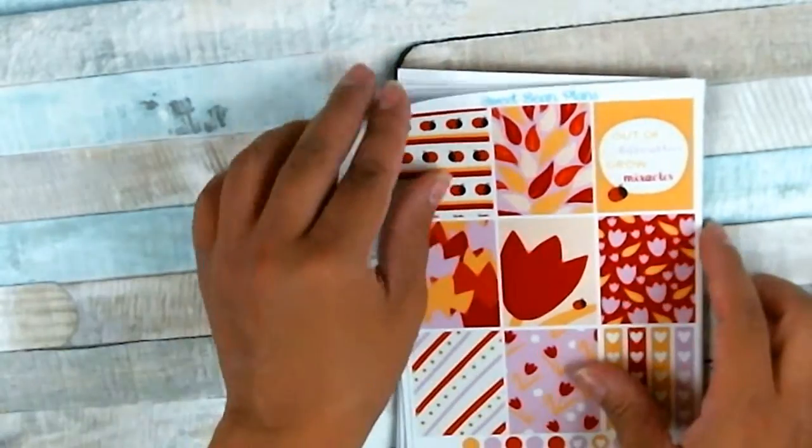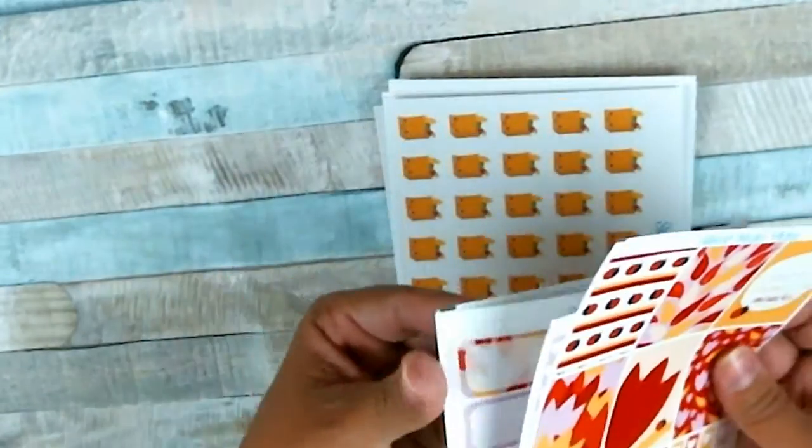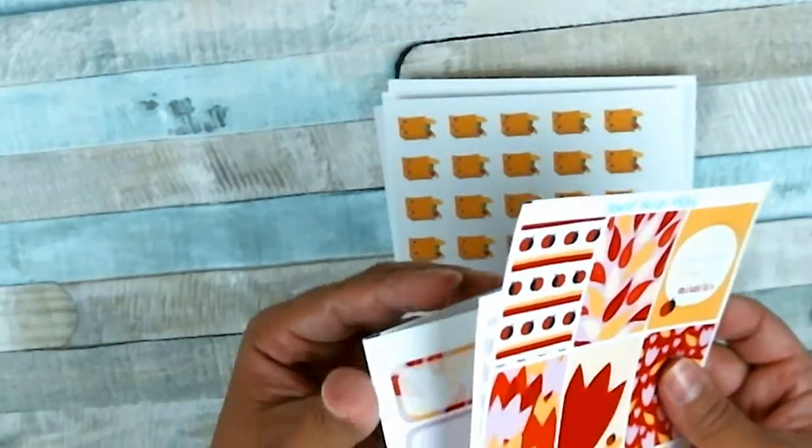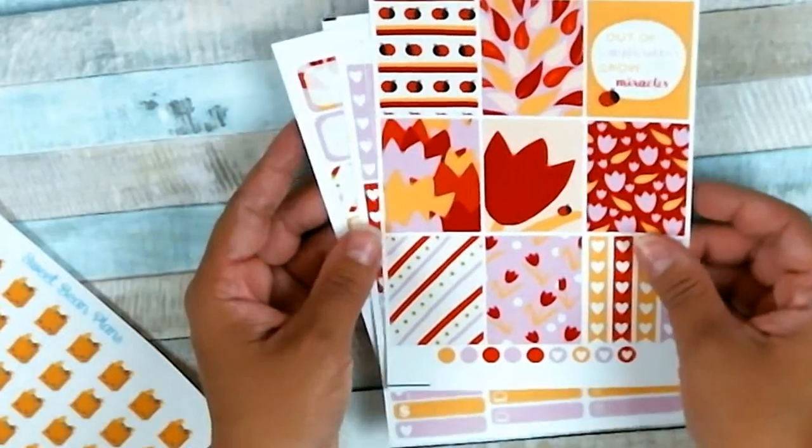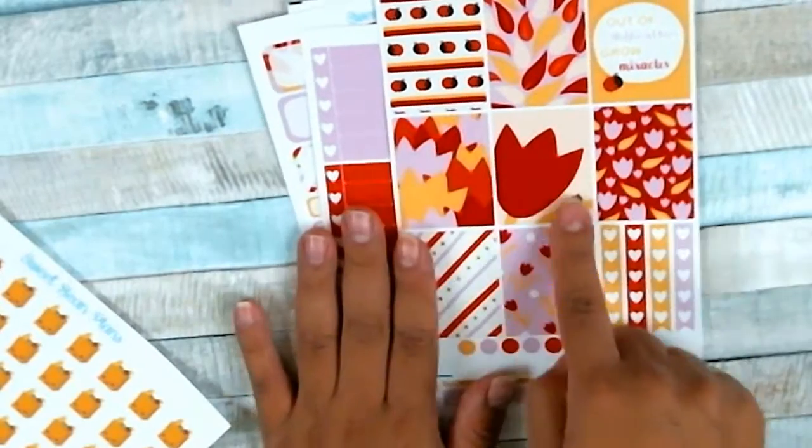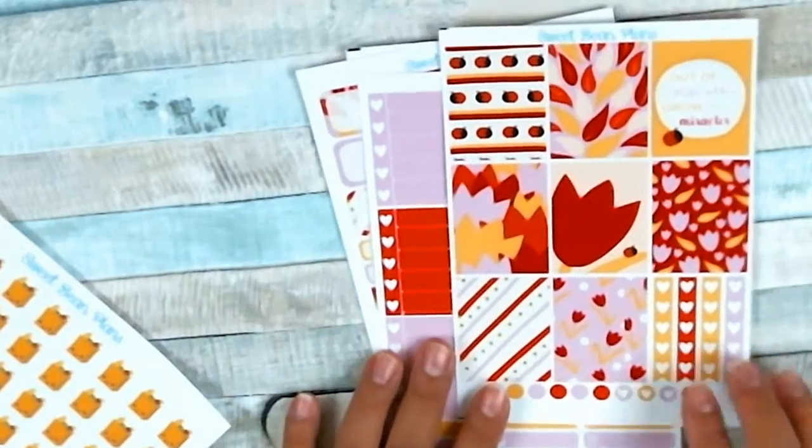If you hear some noise, that's my little baby. This one here is a kit, I think it's called Wildflower. It's a four-page kit. Look how cute and bright the colors are.